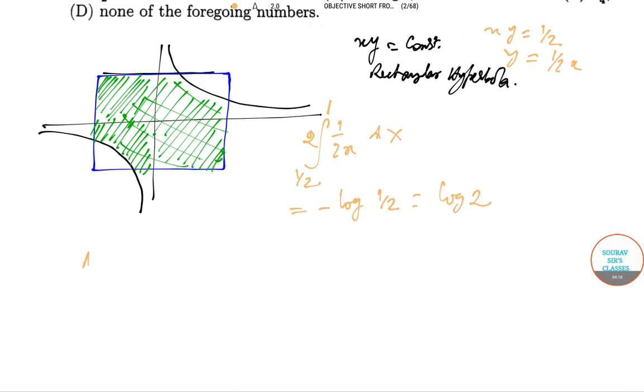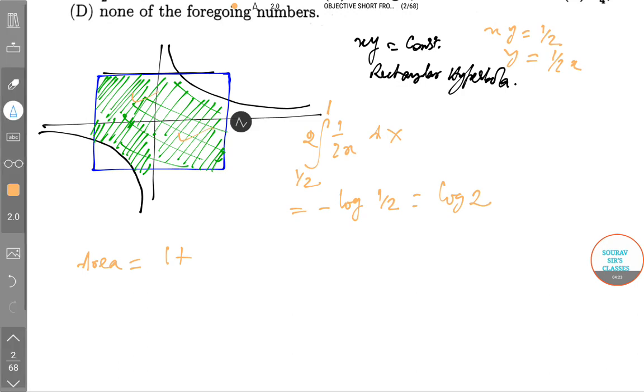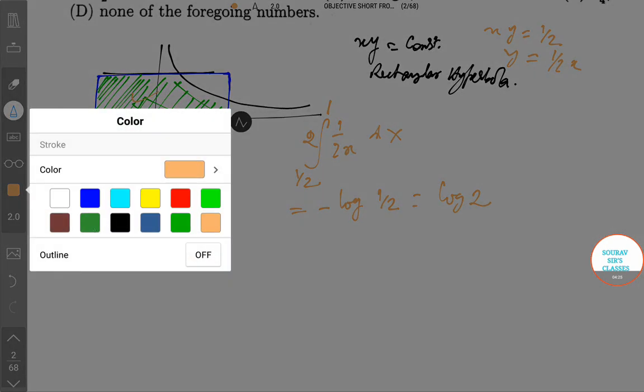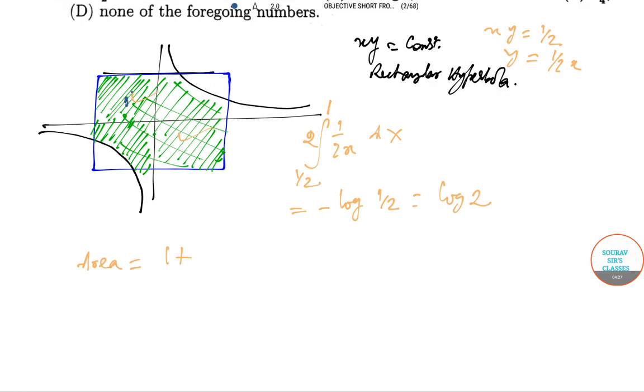So the area is, you see, this part is unit 1, this part is unit 1, so if we mark with a darker color here.